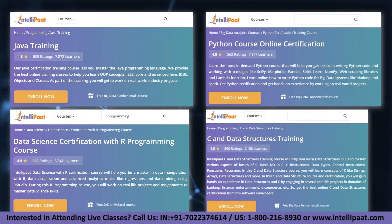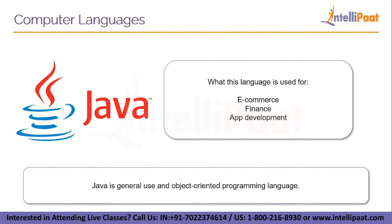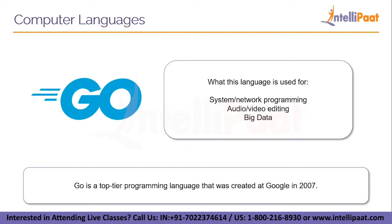Java is widely used in areas such as banking, billing and the stock market. Go is used in system network programming, audio and video editing and big data. Go is a top tier computer programming language that was created at Google in 2007. The efficiency of Go is what sets it apart — it can run multiple processes at the same time. In terms of programming languages, it has a large vocabulary, which means it can display more data than any other languages.